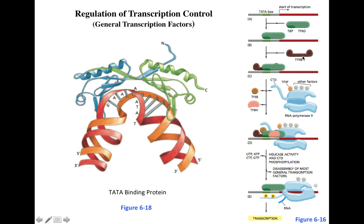Once TF2D, TF2A, and TF2B are bound to the promoter region, RNA polymerase 2 — associated with transcription factor 2F — is recruited. TF2E recruits this complex and also recruits transcription factor 2H. Transcription factor 2F is structurally similar to the sigma factor in bacteria, being involved in RNA polymerase 2 recruitment.